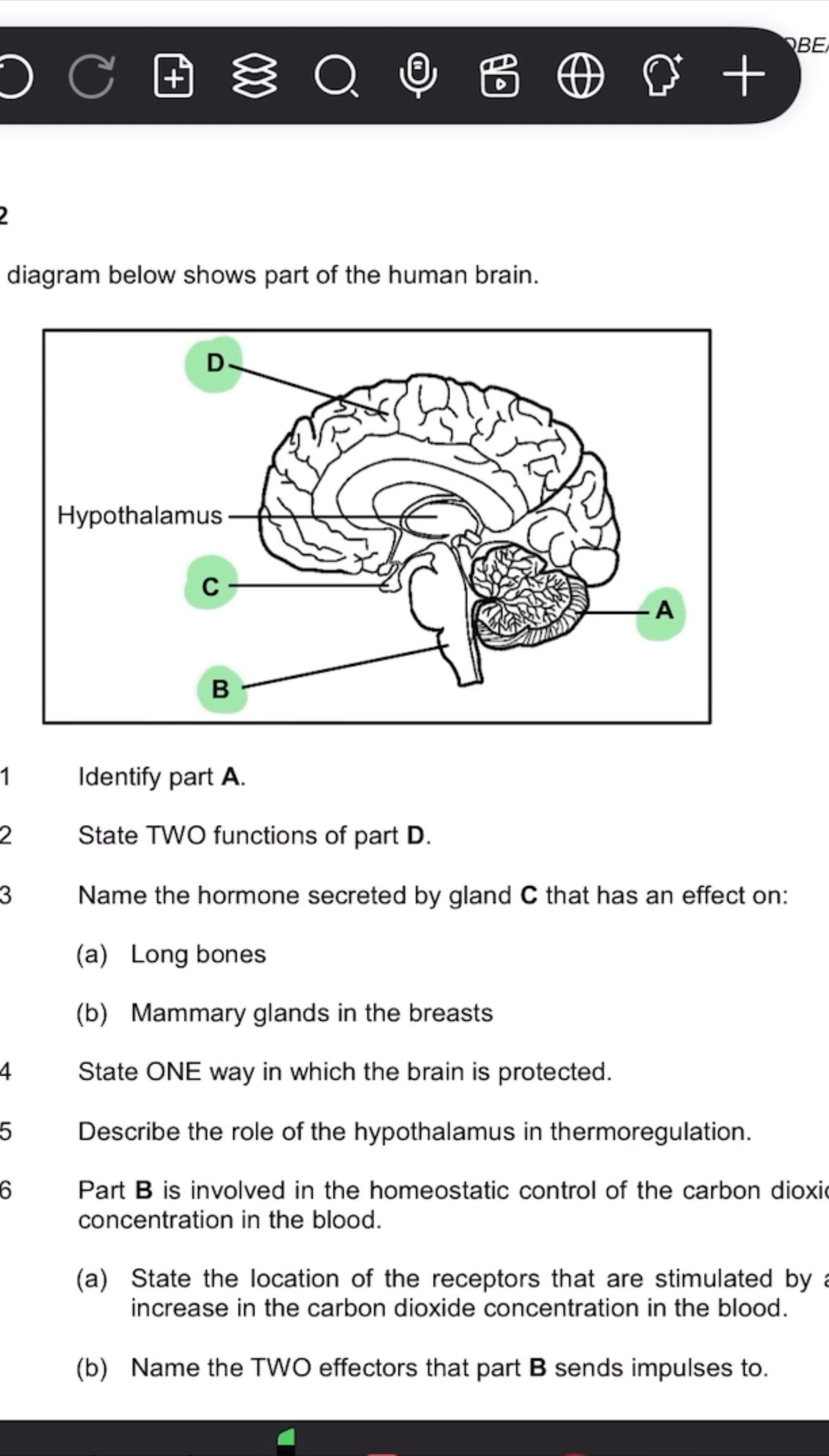Next thing is obviously note the section. So 2.1.1 says identify part A. So it doesn't say what is part A. So you're just going to put what it is. However, look at question 2.1.2. It now says the functions of D. So it doesn't ask you what D is. All you have to do is write down the functions that occur at D.